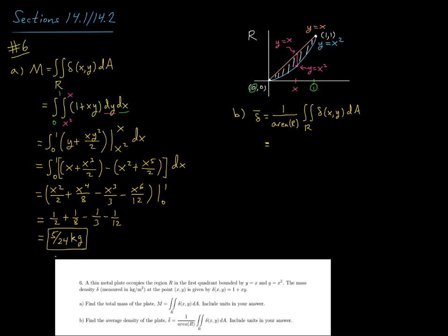So for part B, it's asking us for the average density of the plate. We also did something like this in problem 2. For that, we just want the double integral, and then we'll divide that by the area of our region. Now we know the value of the double integral is 5 24ths, so that part is already covered.